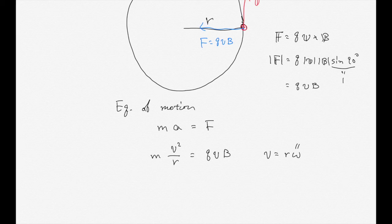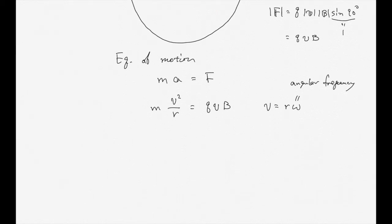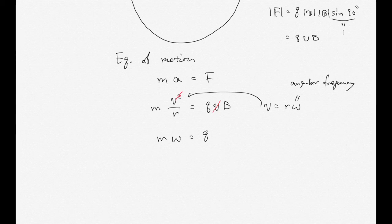This omega is the angular frequency. If we substitute V equals R times omega into the equation of motion, one of the R's cancels, giving m times omega equals Q times B. Therefore omega equals Q times B over m.